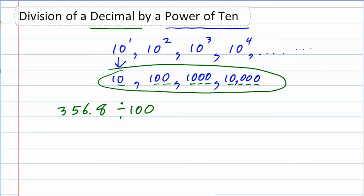But since we're dividing, we have to figure out whether we're moving it to the left or the right. Whenever we divide, we make things smaller. When we divide by 10 or 100, we're going to get a smaller number than the one that we started off with. So that will help you remember that when we're dividing by a power of 10, we're going to move the decimal to the left.